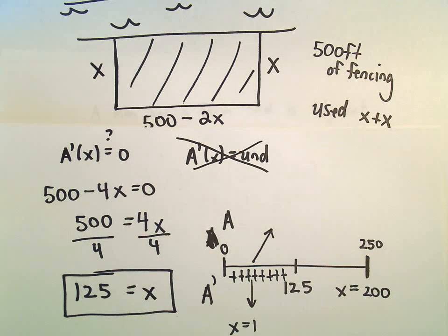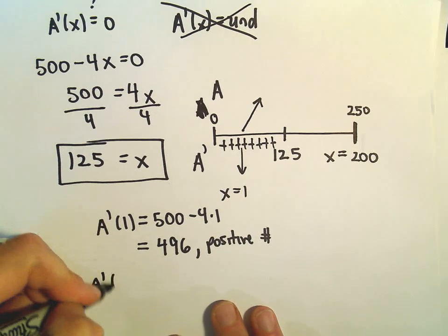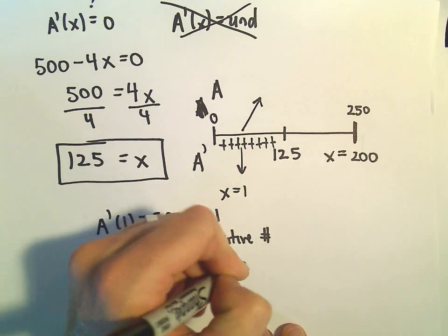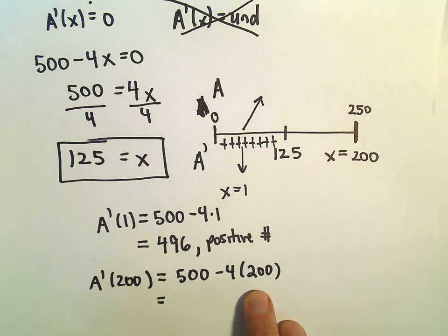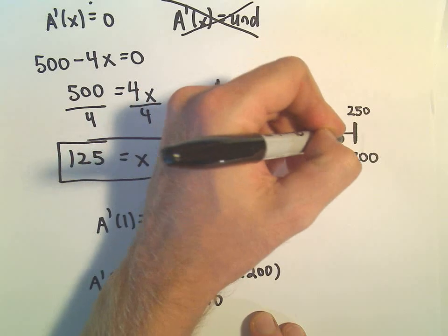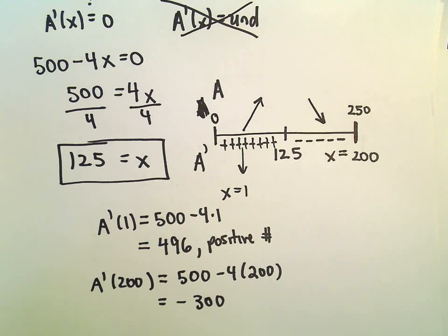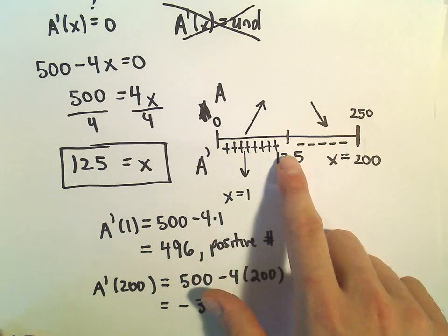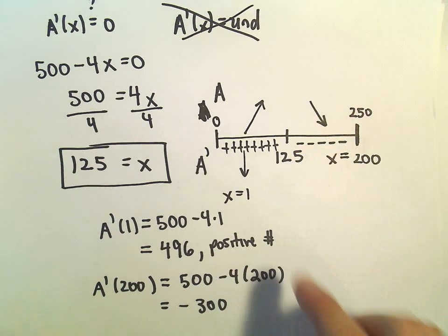I'm going to plug that into my derivative again and just think about the sign of it. So we would have 500 minus 4 times 200. Well, that's going to be 500 minus 800. That'll give us negative 300. So that tells me that since the derivative is negative, it tells me that the original function starts decreasing at that point. So that tells me that the area increases as x approaches 125. Once you go past 125, it starts decreasing.